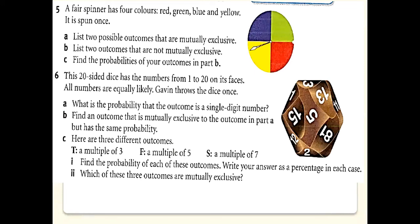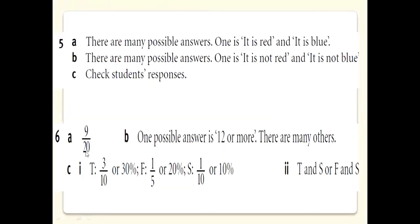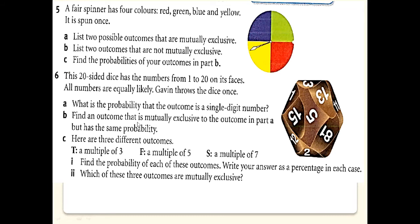In question six, you have a dice with 20 sides, numbered 1 to 20. Part A: what is the probability that the outcome is a single digit? Single digits are 1 to 9, so there are 9 single-digit outcomes out of 20. Part B asks for an outcome that is mutually exclusive to part A, meaning it has the same probability but no overlap with single digits.